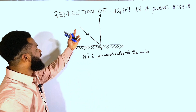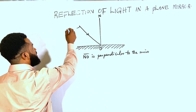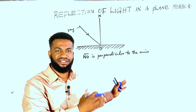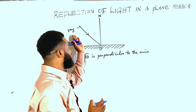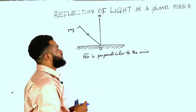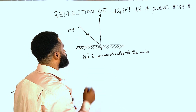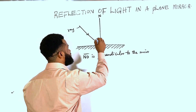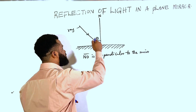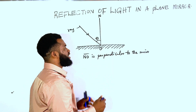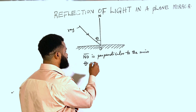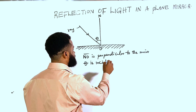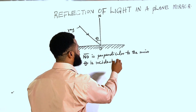This line is called a ray — ray of light — just the path that light takes to enter the mirror. Once that is done, there will be an angle theta with which the light enters, which is called the incident angle.